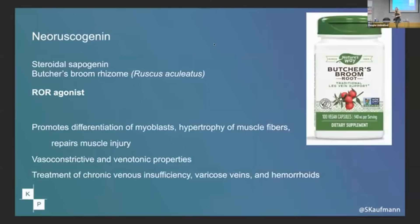Here's another one you may not have heard of: Neoruscogenin. People take it for hemorrhoids and varicose veins — pretty bizarrely random. It also helps you grow muscle, which is useful. But again, it's an ROR alpha agonist — same mechanism. It's going to help you sleep better. It's not going to put you to sleep, but it will increase the oscillation so that you sleep deeper and better, and your Oura Ring will be happy.